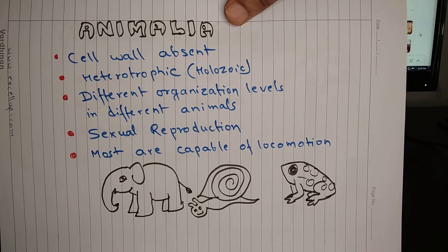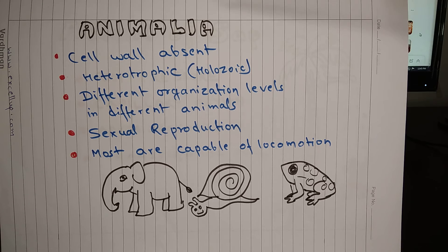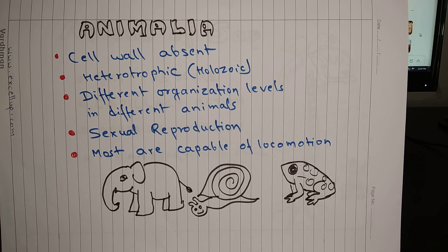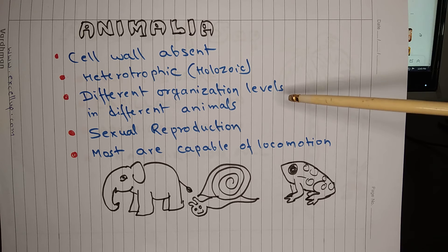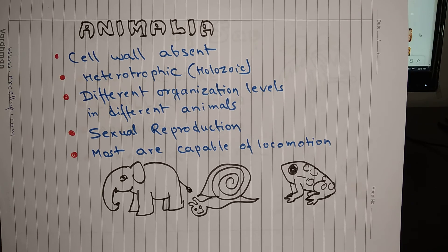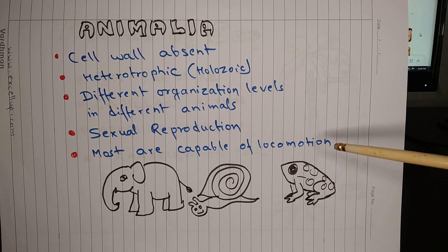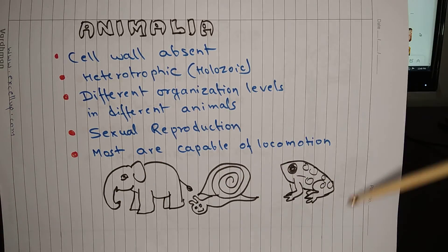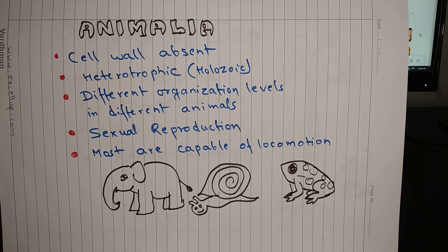Kingdom Animalia: cell wall is absent in animals. Animals are heterotrophic and follow holozoic mode of nutrition, meaning they ingest food and digestion is carried out inside the body. Animals show different levels of organization: tissue level, organ level, or organ system level, depending on the complexity of the animal. Reproduction is sexual and most animals are capable of locomotion. Examples include elephant, snail, and frog.